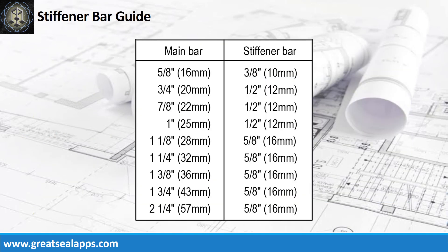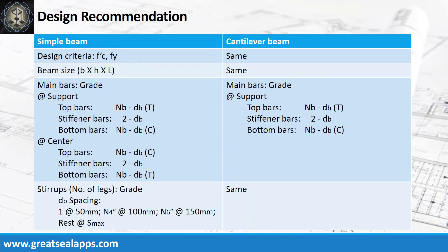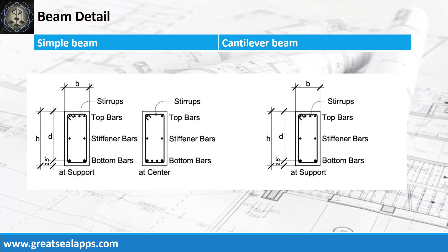Stiffener bar guide for different sizes of main bars used for design. Design recommendation format is as follows: simple beam — design criteria, beam size, main bars including support and center section, and stirrups. Cantilever beam is the same as simple beam but without the center section. Thank you for watching. If you learned something from this video, please like, share, and subscribe to this channel.